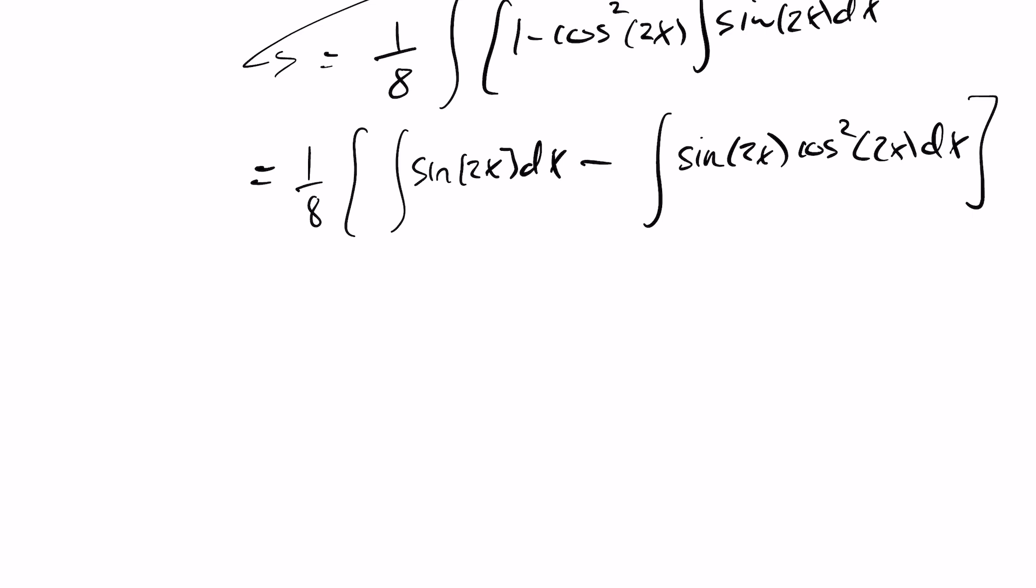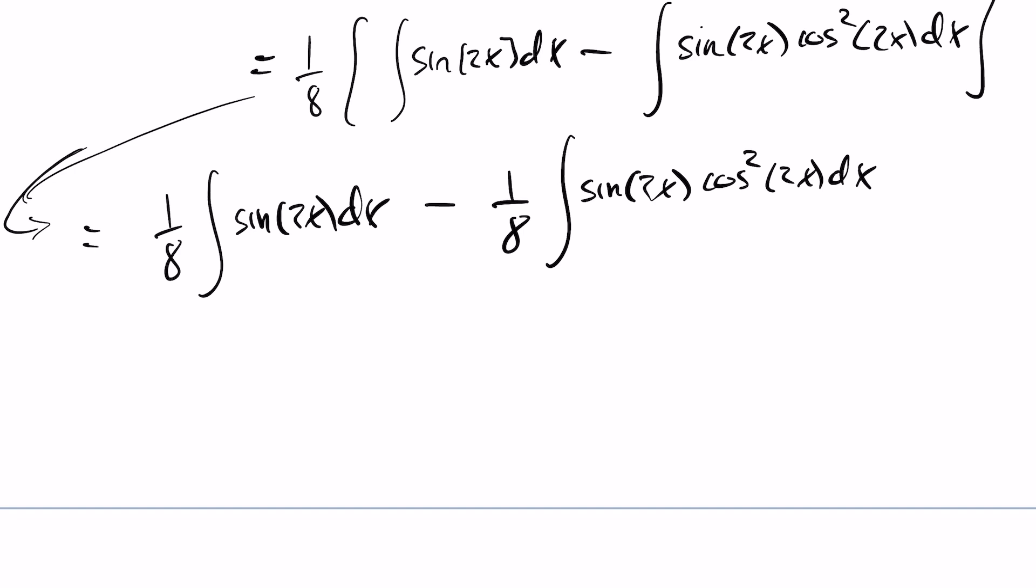So now if we take a look here, let's give us a little more room. I've got a 1 eighth, the integral of sine of 2x dx minus 1 eighth, the integral of sine of 2x cos squared of 2x dx. So I can take the integration of this here with a little bit of an adjustment rate.